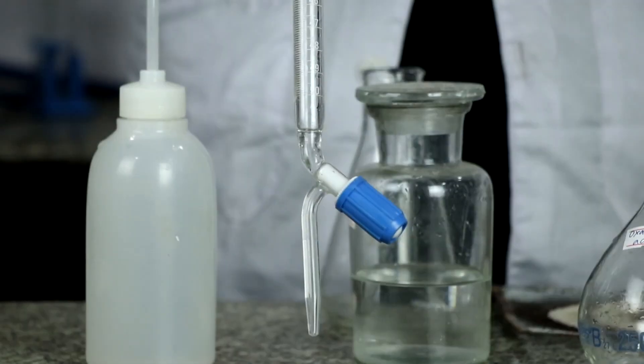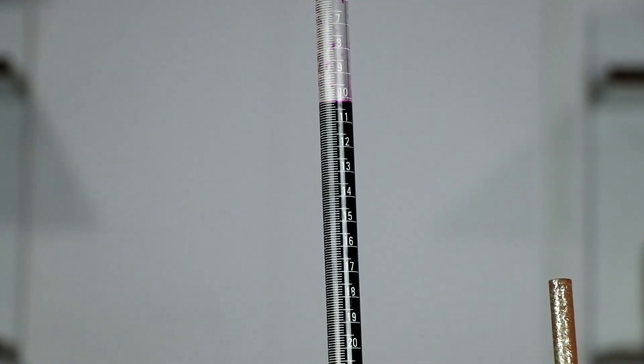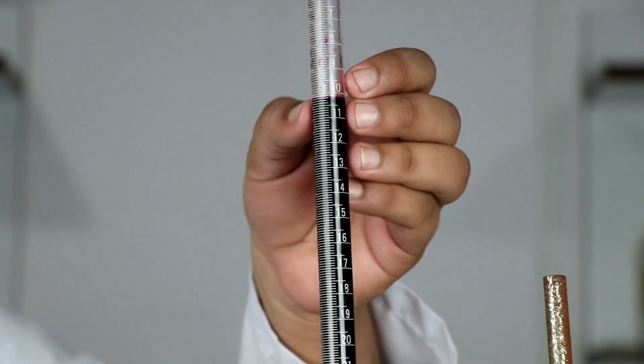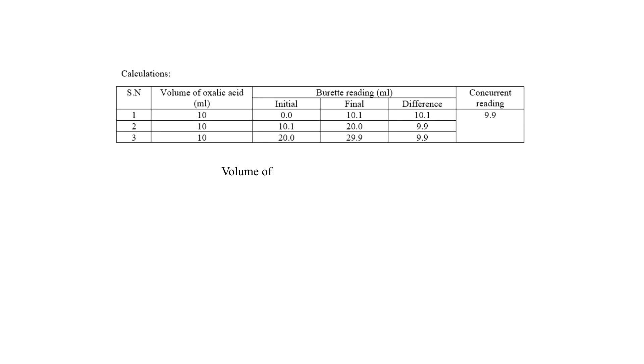Calculations. The initial burette reading was taken as 0. The final reading obtained was 10.1. This process was continued until we got concordant reading. The volume of acid taken was 10 ml. The concentration of acid taken was 0.1 normal. Volume of KMnO4 consumed was 9.9 ml. The concentration of KMnO4 was yet to be found.